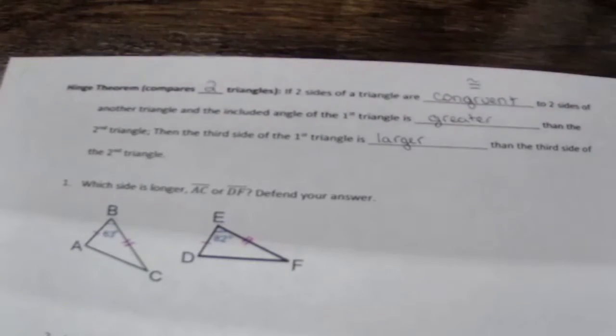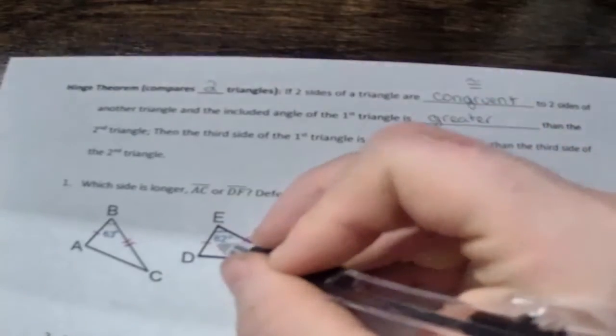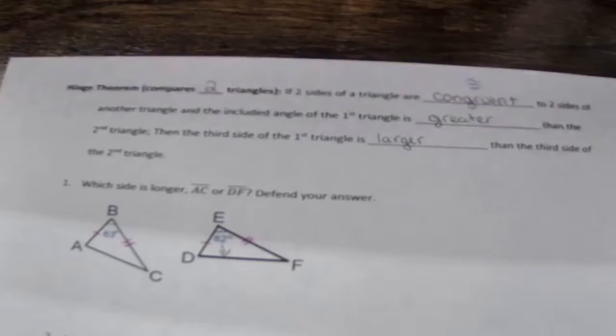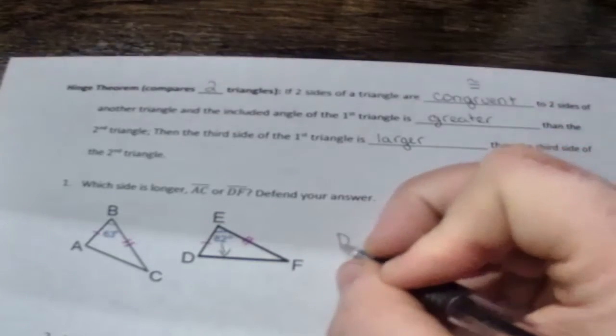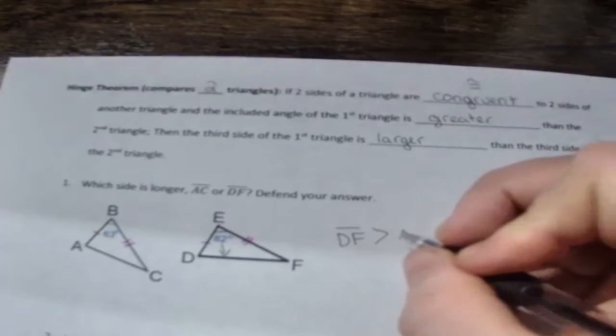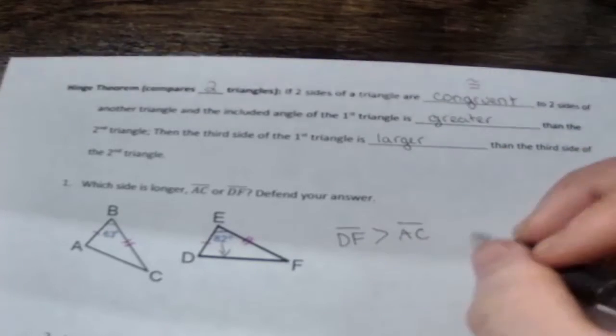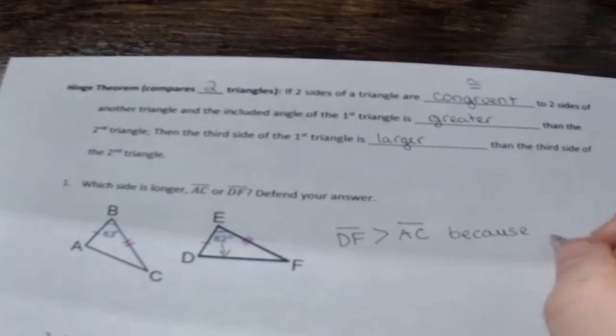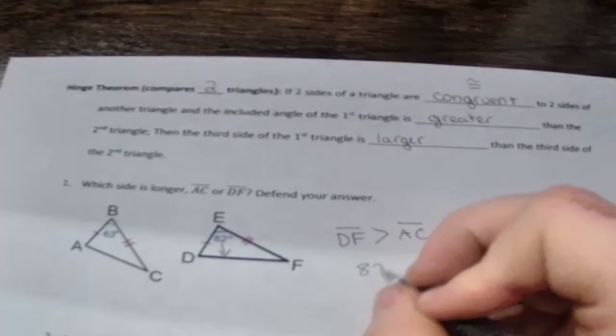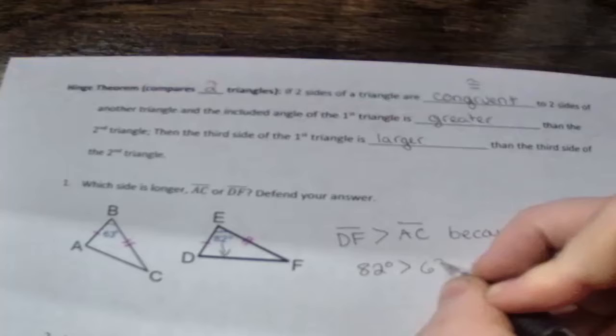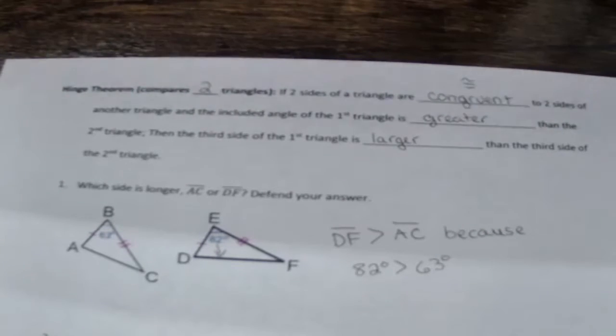That is correct, 82 is bigger. So since it's bigger, this one across from it will be the bigger side. So we are going to say DF is greater than AC because 82 degrees is greater than 63 degrees. So defending our answer is just giving the reason why we chose that answer.